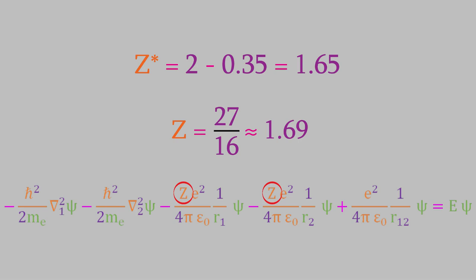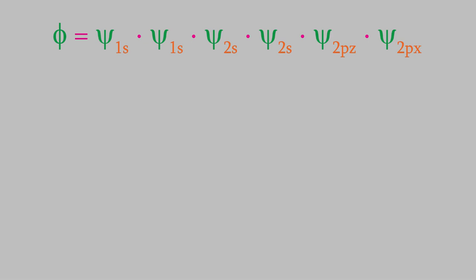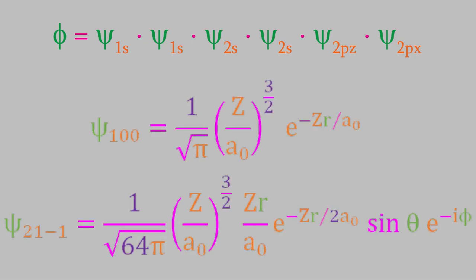There's one more thing I want to mention today. In the last video we talked about trial wave functions, and we saw that one reasonable trial wave function is a product of hydrogen wave functions, one for each electron in the system. However, this can be a very challenging calculation. Here are a couple of hydrogen wave functions — one for a 1s electron and one for a 2p electron. Equations involving wave functions like these are actually very time consuming to solve, even for a computer. For that reason, we don't always use a product of hydrogen wave functions as our trial wave function.